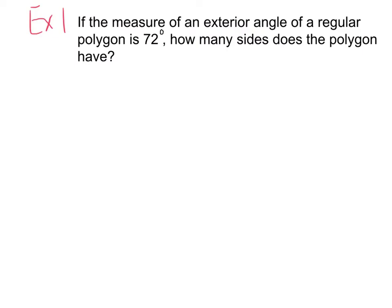For example one, it says, if the measure of an exterior angle of a regular polygon is 72 degrees, how many sides does the polygon have? I'm going to start by underlining or highlighting anything that's important. So first of all, I know that they're asking me for an exterior angle, and that it's of a regular polygon. Regular meaning all the sides are equal. I know that each angle on the outside is 72 degrees, and the question is, how many sides does the polygon have?